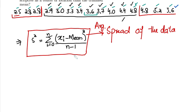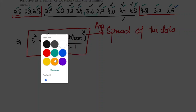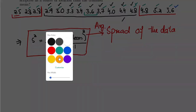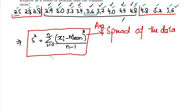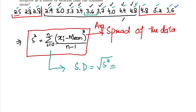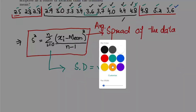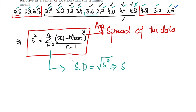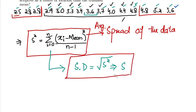Similarly, if we want to find the standard deviation, what we have to do is take the square root of s-squared, and that will give us s, where s is basically the standard deviation.